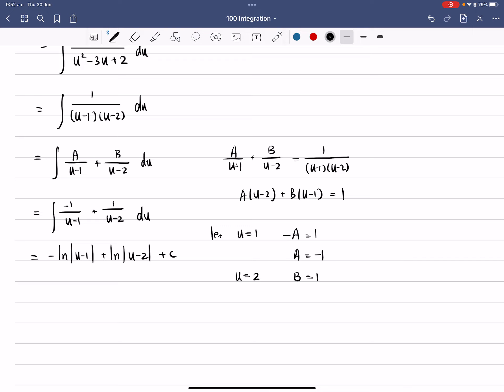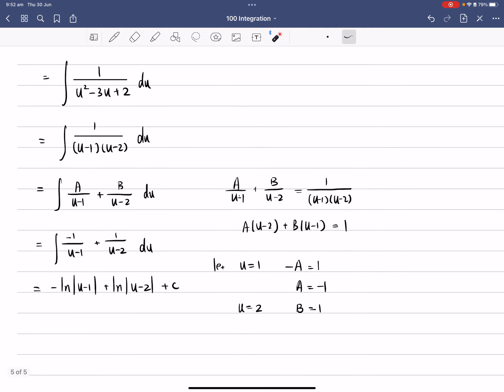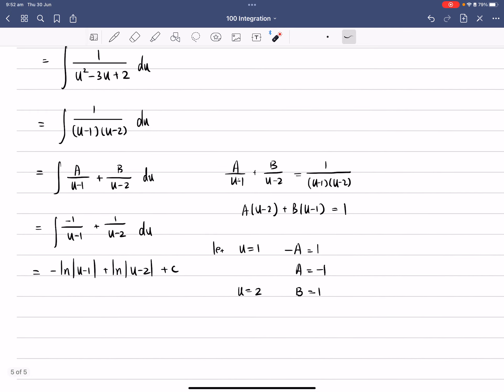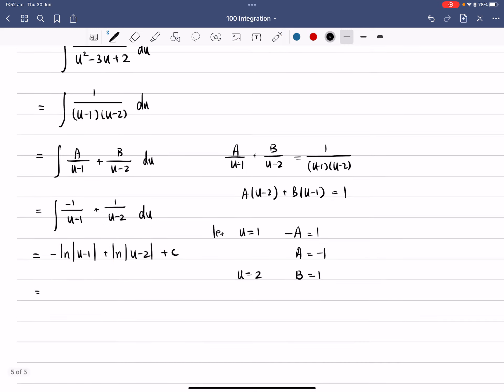Now don't forget, you need to also replace the u by the previous substitution, which is u equals to tanx. Okay, so let's just replace that. In the meantime, probably I'm just going to switch these two order around because I don't really like to have a negative as the leading coefficient. Alright, so that gives us ln|tanx - 2| - ln|tanx - 1| + c. Okay, so that's the answer.